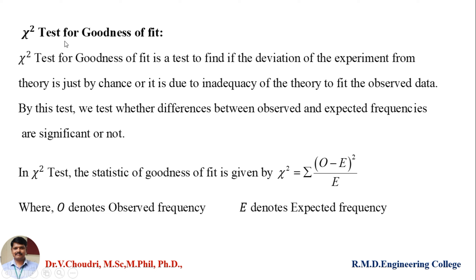What is chi-square test for goodness of fit? It is a test to find if the deviation of the experiment from the theory is just by chance, or it is due to inadequacy of the theory to fit the observed data. By this test, we test whether the differences between observed and expected frequencies are significant or not. The chi-square formula is: summation of (O minus E) whole square divided by E, where O is the observed frequency and E denotes the expected frequency.